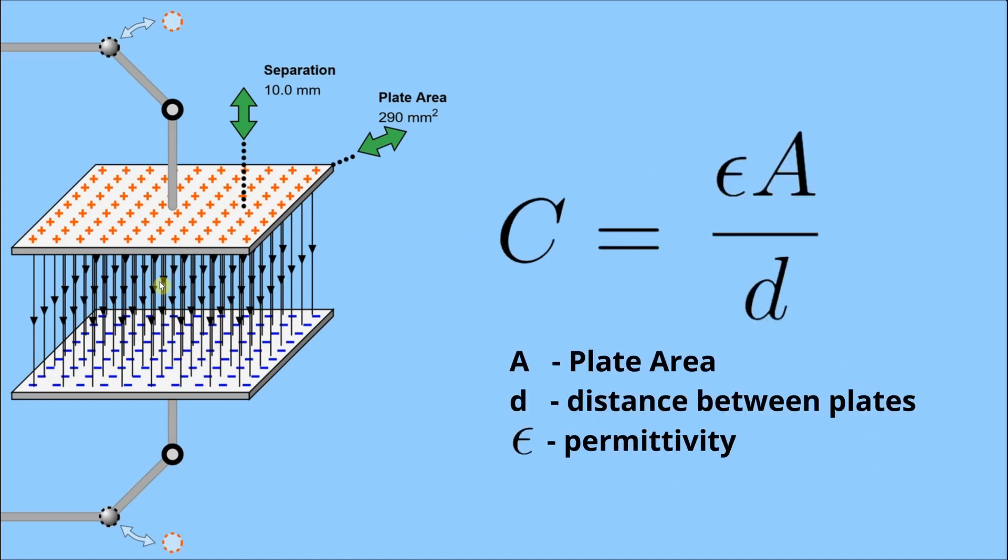where A is the plate area, D is the distance between the plates, and epsilon is the permittivity based on the type of material that is in between the plates. So all of those parameters that go into this calculation are based on physical properties of the capacitor itself, which is exactly what I was working towards and that's it.